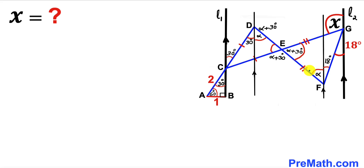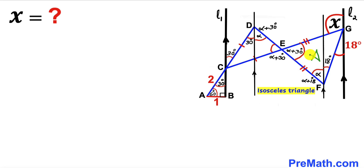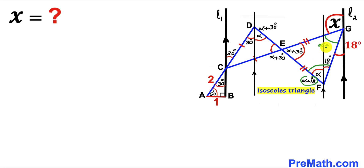Now the whole angle at E for triangle EFG is alpha + 18°. Focusing on triangle EFG, it is isosceles with equal side lengths. Therefore, its base angles are equal: both angles at F and G are alpha + 18°.